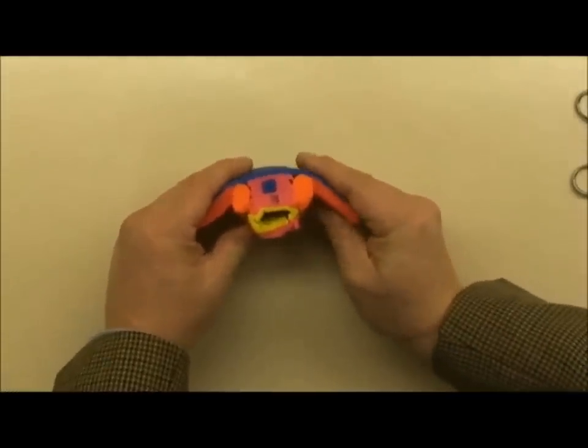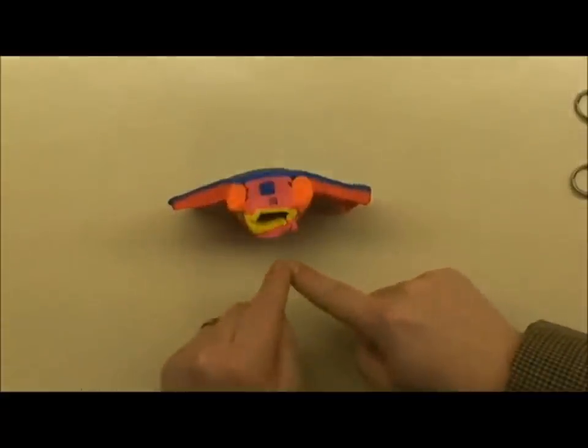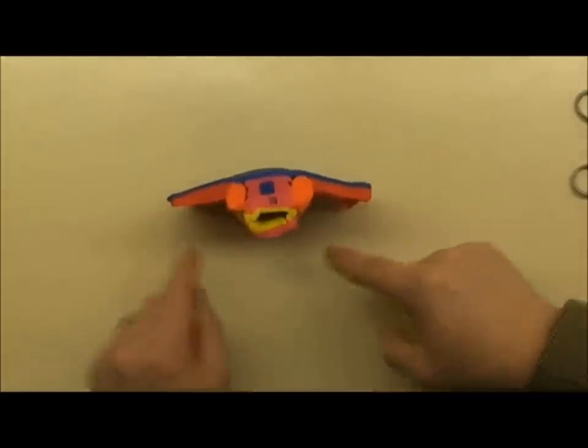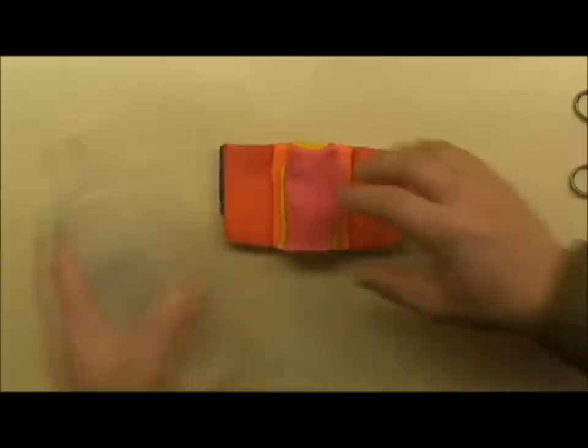And it is going to fold anteriorly just like the visceral layer did. But as it does so, it's going to get longer. And it's going to wrap all the way around and surround not only the gut tube but make a cavity within the body.